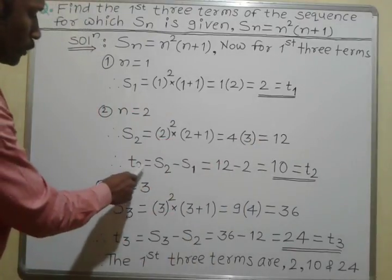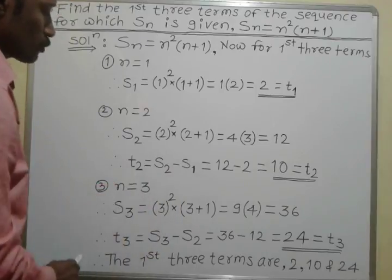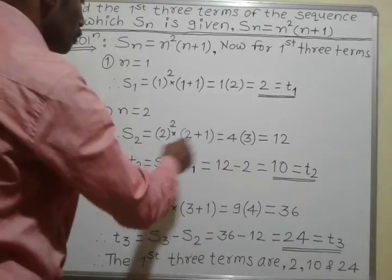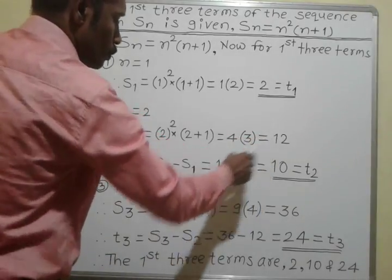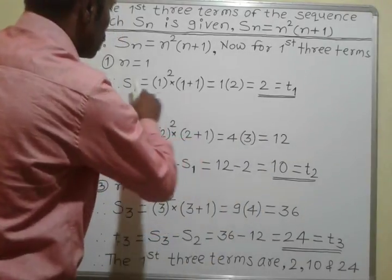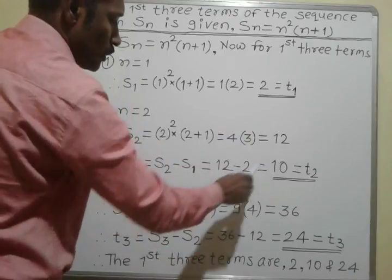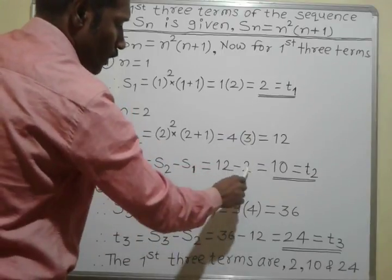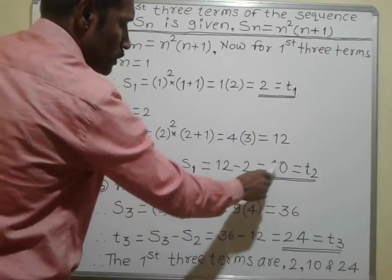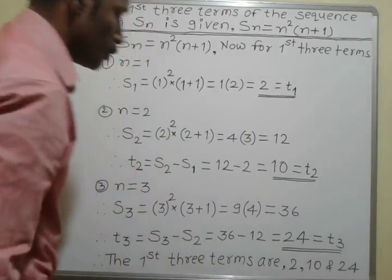The formula for T2 is equal to S2 minus S1. S2 is 12 minus S1, that is 2. Therefore, 12 minus 2 is equal to 10. This is the value of T2.